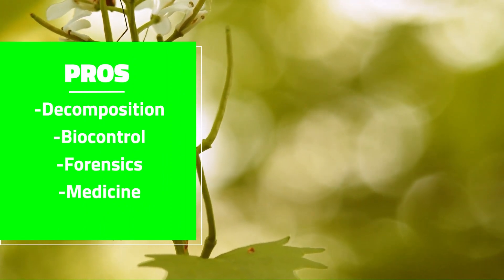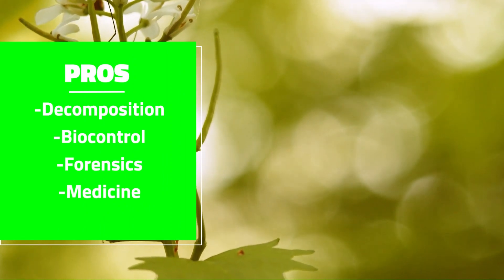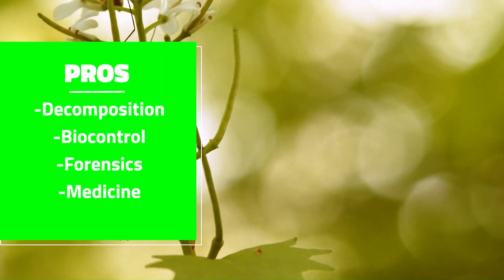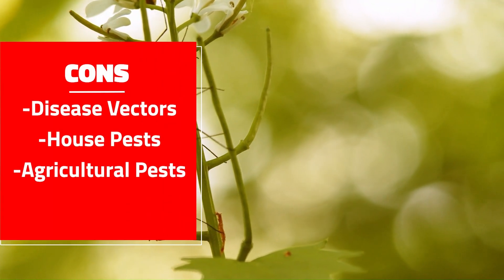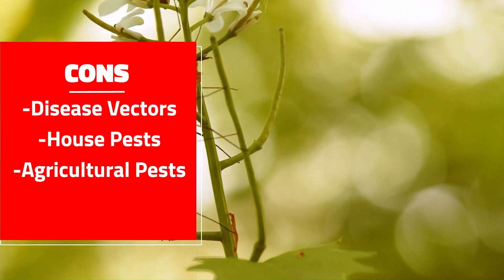In addition to the benefits true flies provide humanity, some can also be harmful, with roles as disease vectors and agricultural pests. Fly larvae are known as maggots and can live in almost any environment, but are more commonly adapted to moist environments. These organisms feed on almost anything and perfectly fill out the role of generalists.